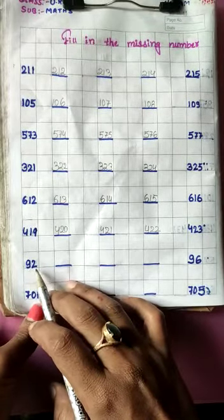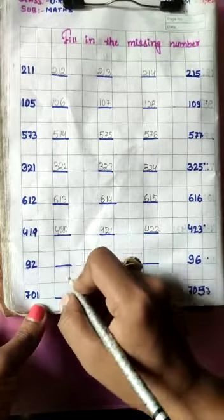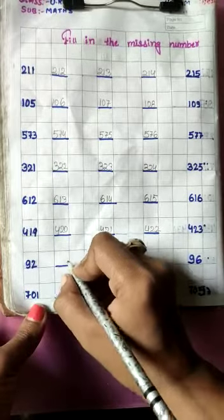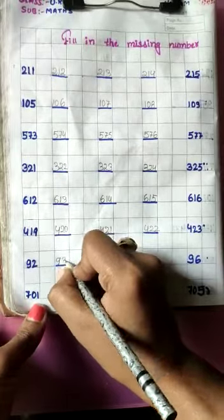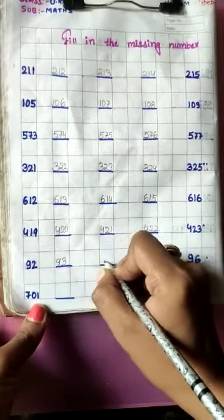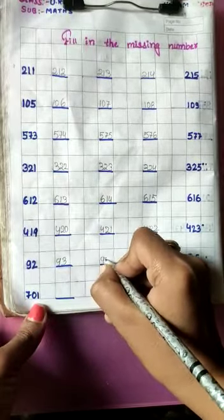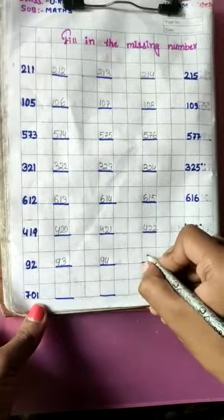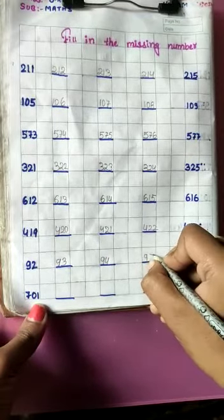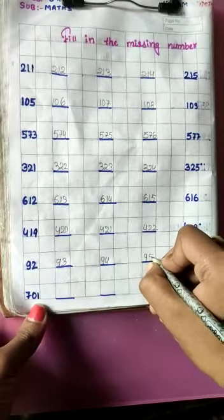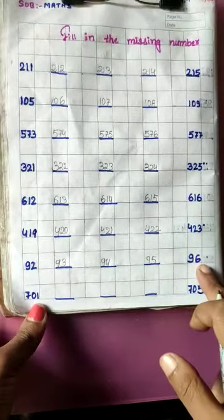Now next: 92. Which number is missing? 93, 94, 95, and 96.